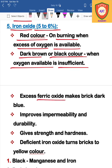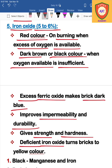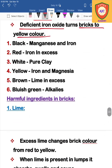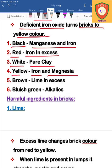Iron oxide also makes the brick impermeable. It provides strength and hardness. If iron oxide is deficient, the brick will be low in strength. Color changes in bricks: black is made of iron; red is made of iron; white is from pure clay; iron and magnesia produce brown; lime produces a blueish green color along with alkalis.